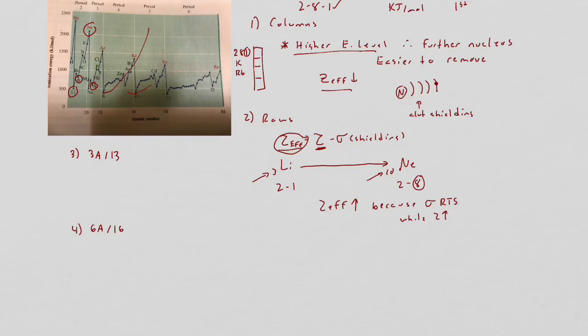But then you see these dips along the way. Those dips mean those electrons are easier to remove because for some reason they're in a relatively unstable position or somehow shielding is affecting the ability of those electrons to be removed, making it easier.